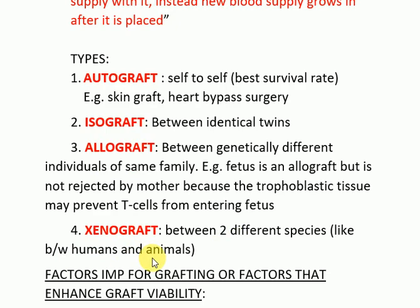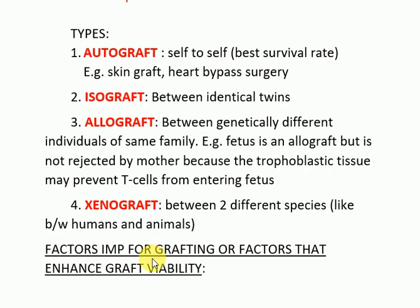A xenograft is between two different species, such as between humans and animals. For example, a pig heart can be transplanted into humans — that is a xenograft.